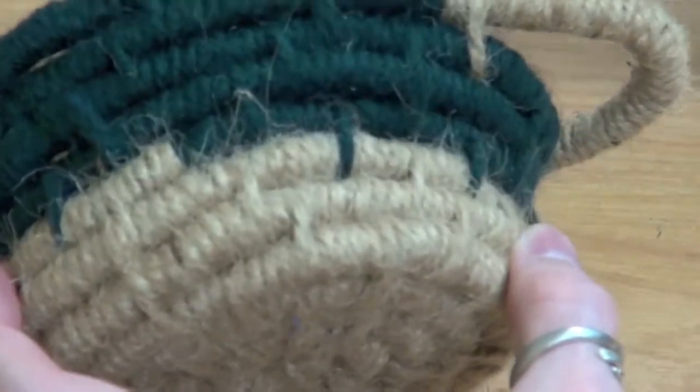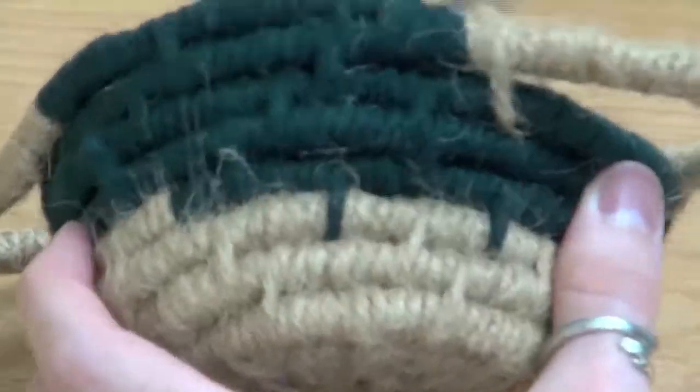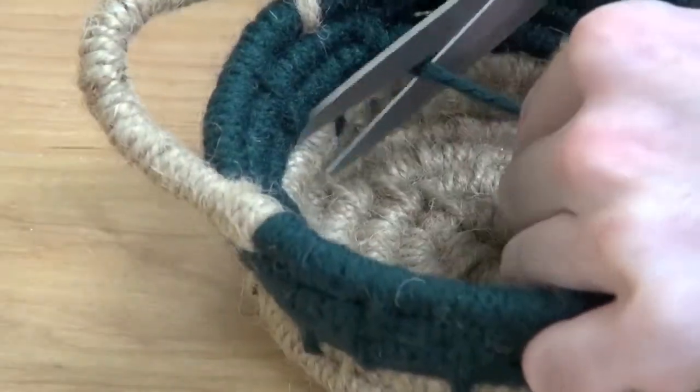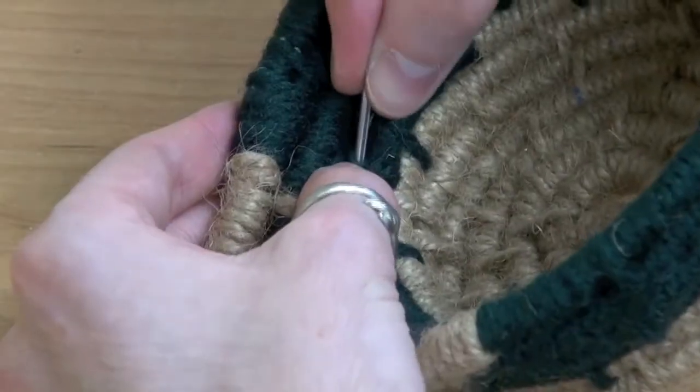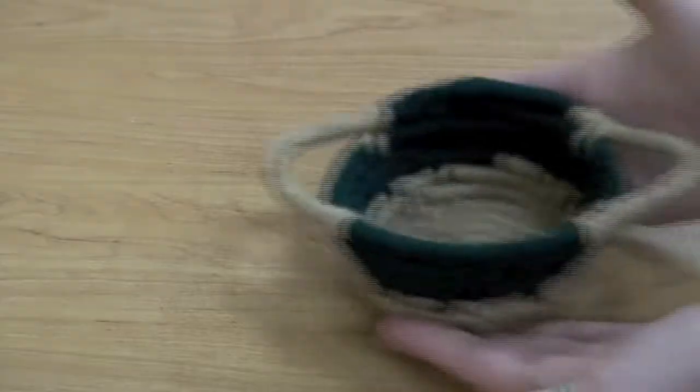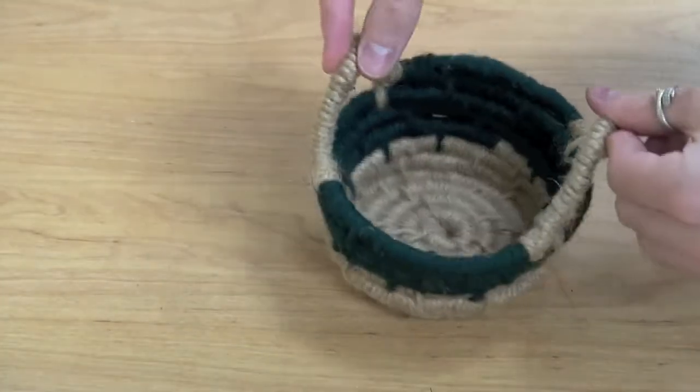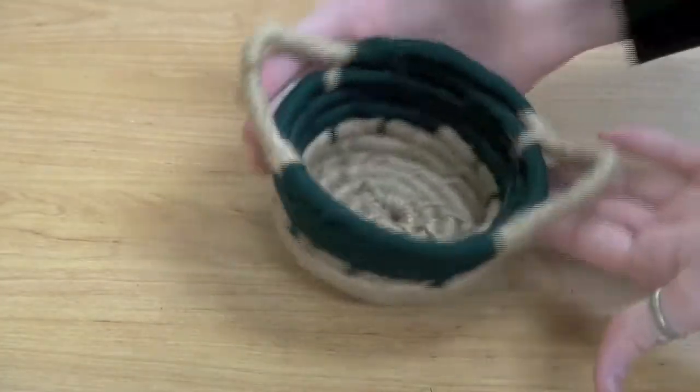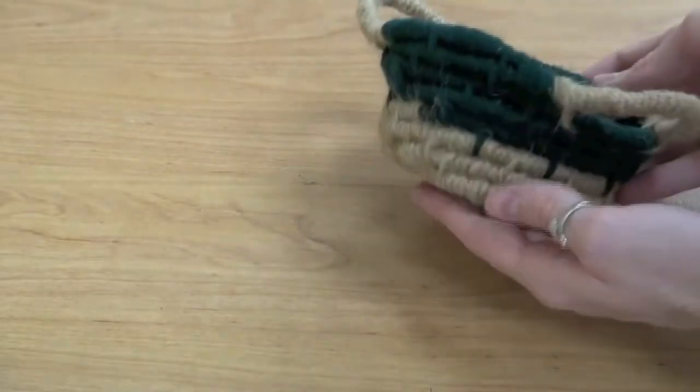To finish it off, I'm just wrapping around the bottom coil there of green and then pushing the remainder of the thread through so it disappears. And there you have it, a finished small basket. These things are great for carrying small knickknacks or other things and small plants.